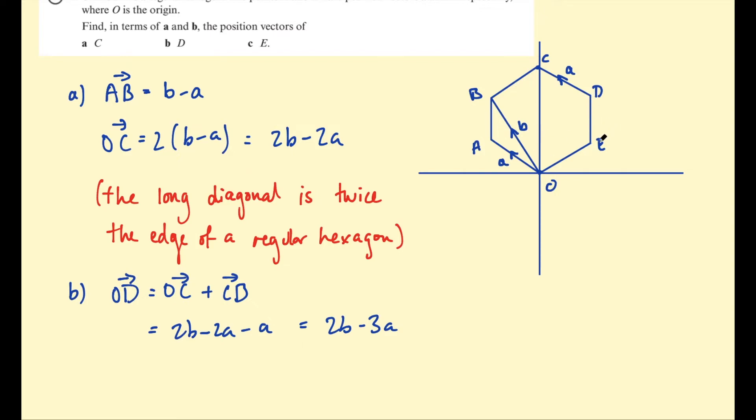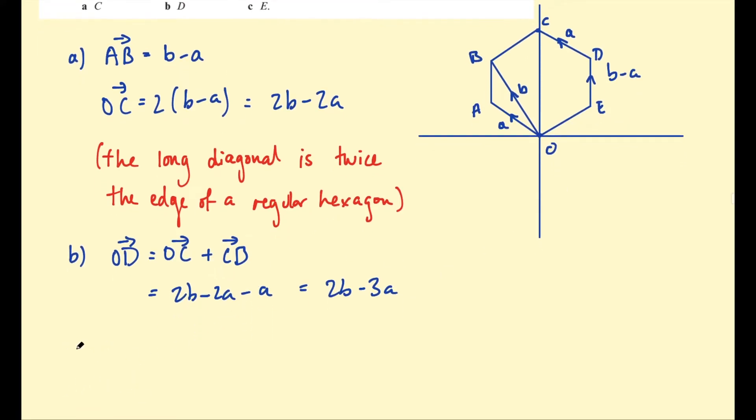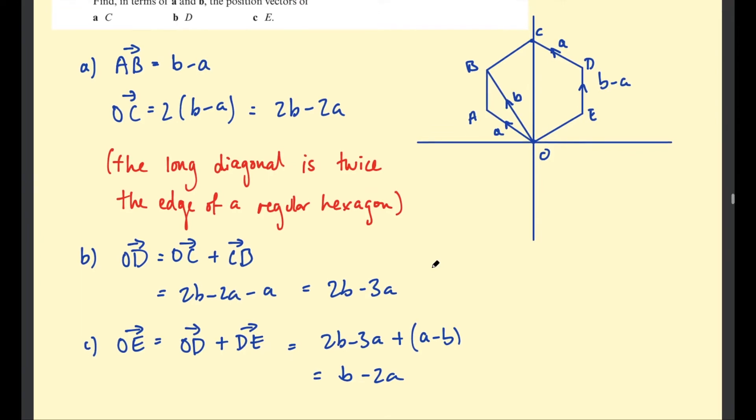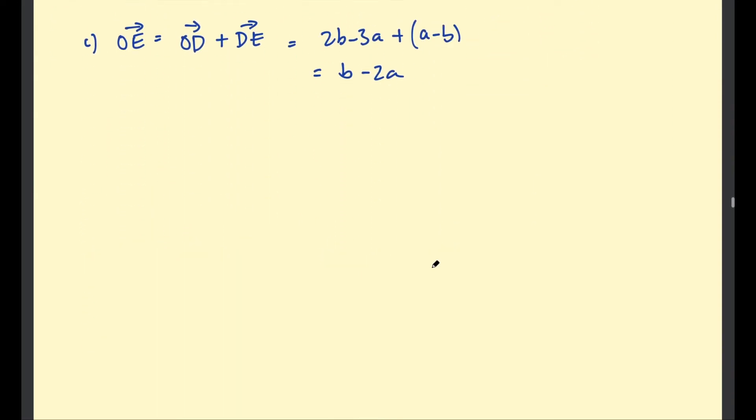Alright, and then the last one is E, and we know ED would be b - a, same as AB. So then we just need to keep going around from D to E. Then OE is going to be OD, which we just found, plus DE. And then OD was 2b - 3a, and DE is negative—in other words, a - b basically. And then this is going to be 2b - b is b, and then -3a + a is -2a. So that was a fairly interesting problem solving question involving position vectors.